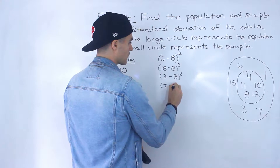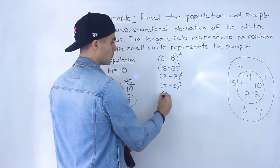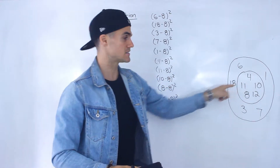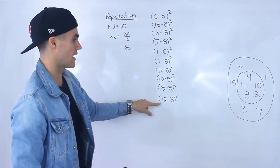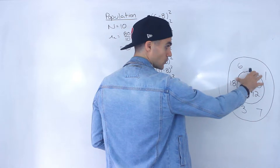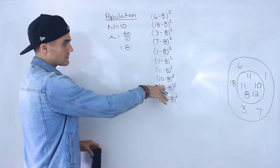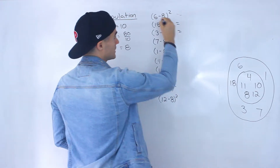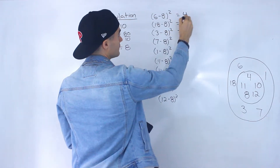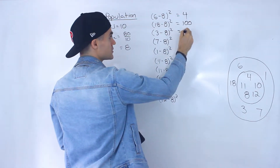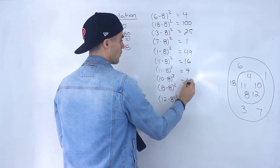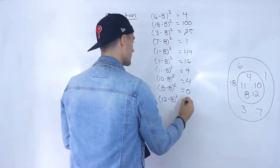Continuing: 7 minus 8, squared; 1 minus 8, squared. Filling in the rest of the data points — which includes the sample values 4, 11, 10, 8, and 12 — remember, we include those because we're looking at the entire population. Computing each squared deviation gives us: 4, 100, 25, 1, 49, 16, 9, 4, 0, and 16.